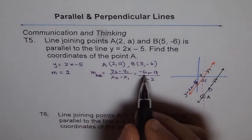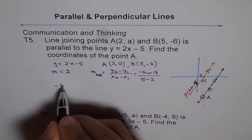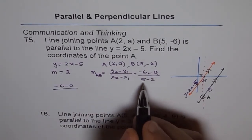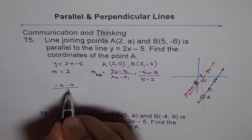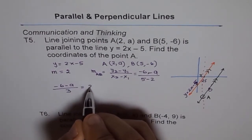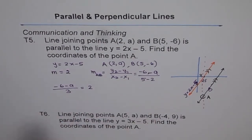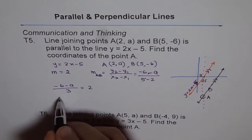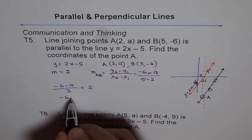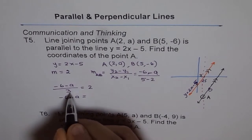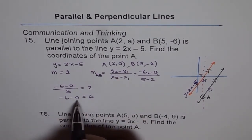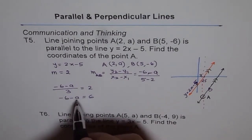So we have: (-6 - a) / (5 - 2) = 2, which gives (-6 - a) / 3 = 2. Cross-multiplying: -6 - a = 6. Now we can solve for a.